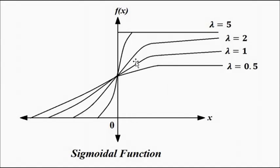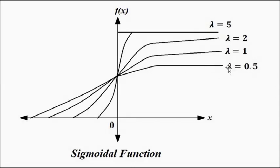Whether binary or bipolar sigmoidal, the shape of the waveform is similar. Each curve is plotted for a particular value of lambda — the steepness parameter. Curves are drawn for lambda values of 0.5, 1, 2, and 5. As you can see, when we increase the value of lambda, the slope and steepness of the curve also increases. For lambda = 0.5 the curve is gentle, and for lambda = 5 it is the steepest. This is the binary and bipolar sigmoidal function.